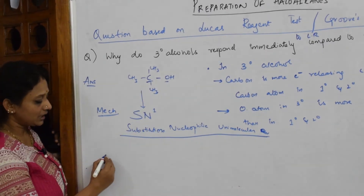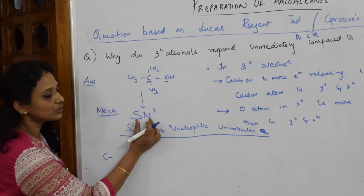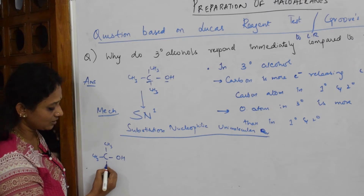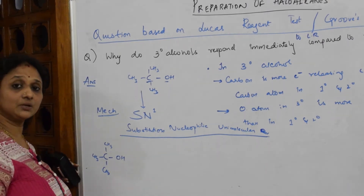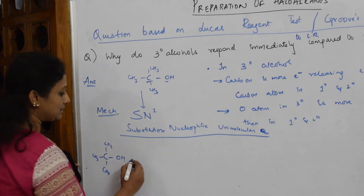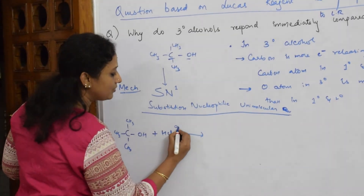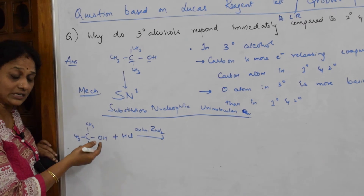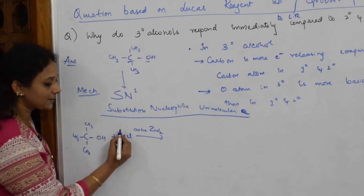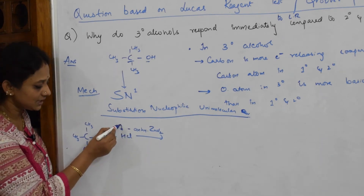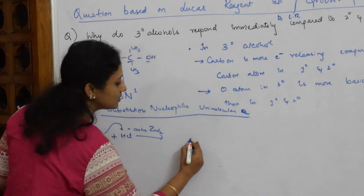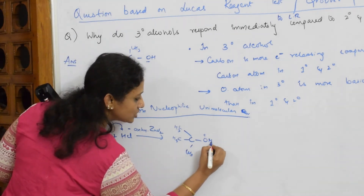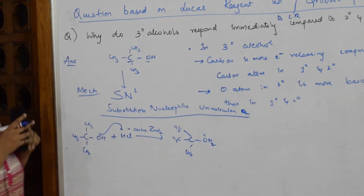Let me show the SN1 mechanism. I take my tertiary alcohol: OH with three CH3 groups. I add HCl in the presence of anhydrous ZnCl2 — that is Lucas reagent. Since the oxygen is more basic, in the first step H+ attacks the oxygen. This gives C(CH3)3 with OH2+, because the bond is shared with hydrogen.